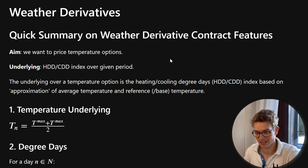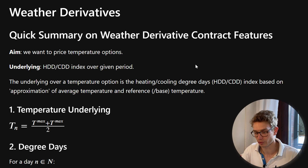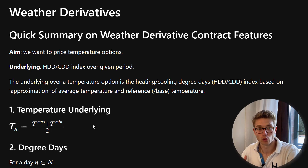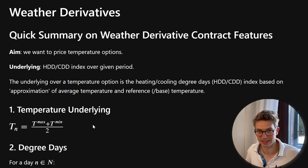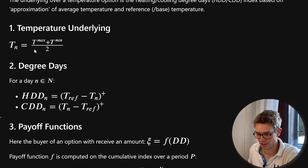Just a recap of what we're doing in this series: a quick summary on the weather derivative contract features. The aim is to price a temperature option where the underlying is either a heating degree days or cooling degree days index over a given period of time. The underlying of a temperature option is this heating degree day or cooling degree day, approximated from average temperature in reference to a base or reference temperature. For daily average temperature, it's just a proxy: you take the T-max and T-min and average the two.